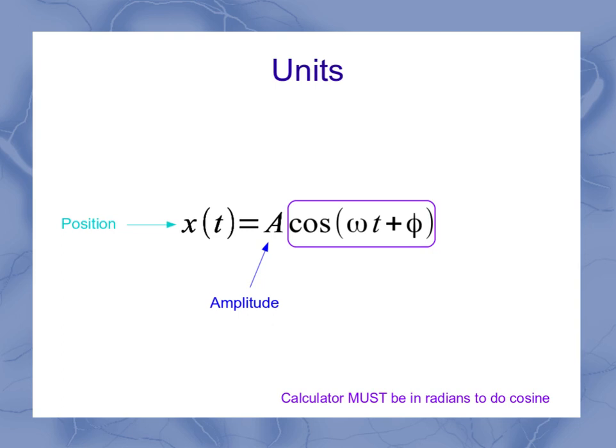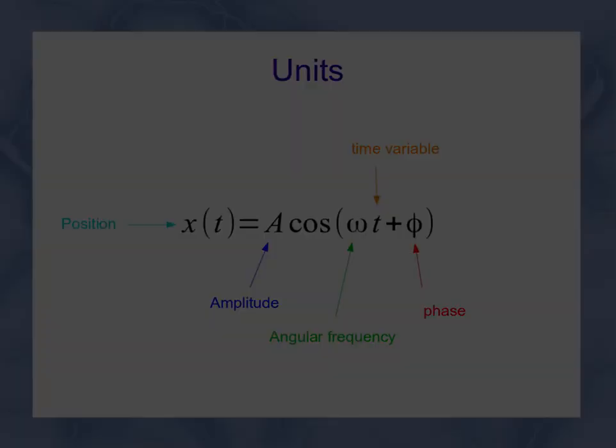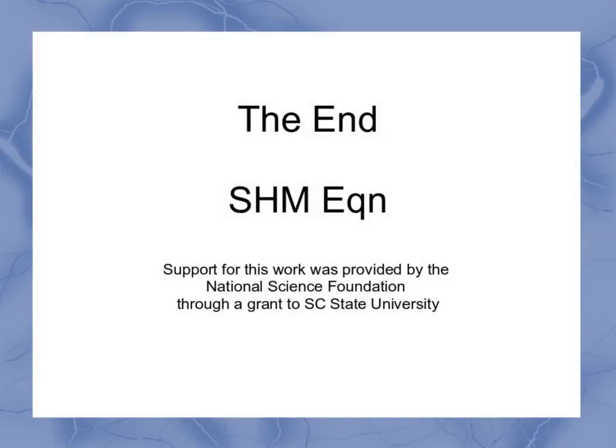That means we have just the amplitude and the position left. So if I express my amplitude in meters, that means my end result position is also going to be measured in meters. If I were to give the amplitude in centimeters, my position would be in centimeters, or even feet, or any other unit in there. So that's our equation for simple harmonic motion, SHM.